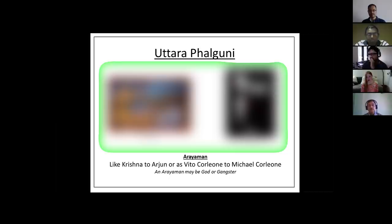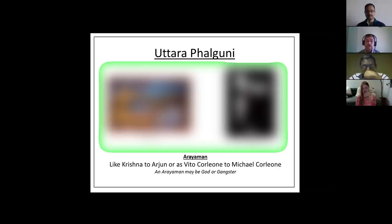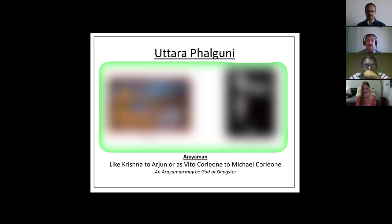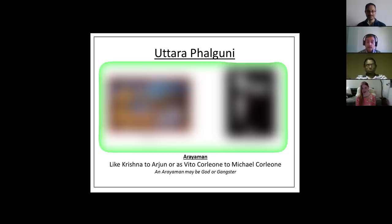Similarly, in the Godfather, Vito Corleone was the boss of the Mafia family. When his third son Michael Corleone refused to enter the Mafia business, it was Vito Corleone's job as Aryaman to guide his son into the family business — because he thought that was the best thing his son could do. So don't make a mistake: just because you're Uttara Falguni doesn't mean you're always an Arjun with a Krishna — you could be a Michael Corleone with a Vito Corleone. An Aryaman can be either a god or a gangster.